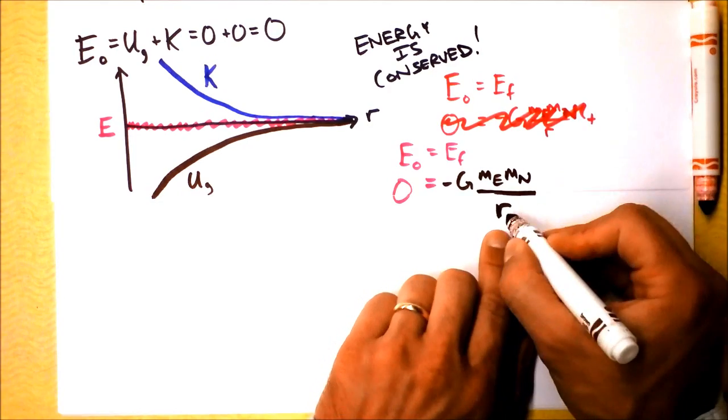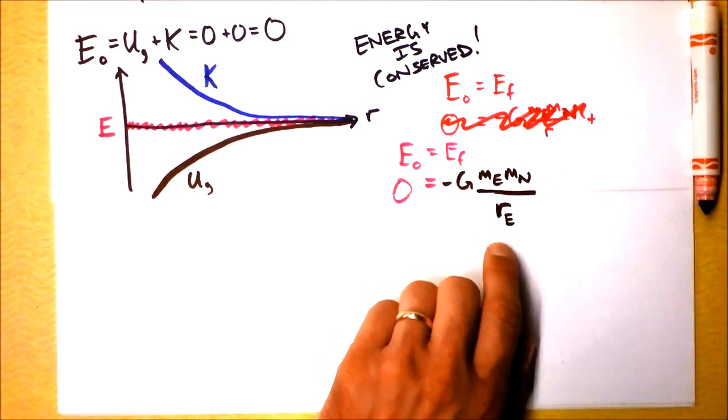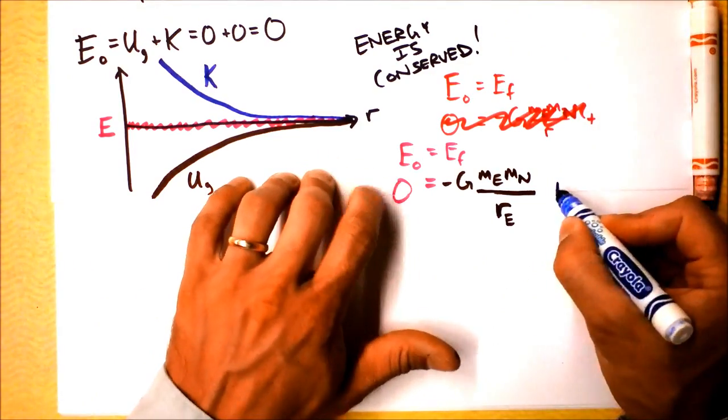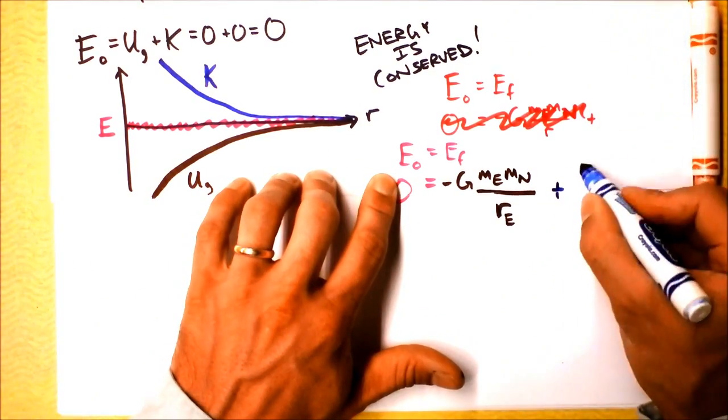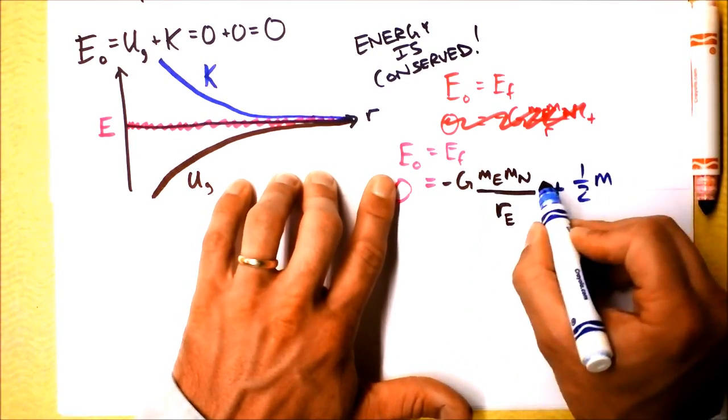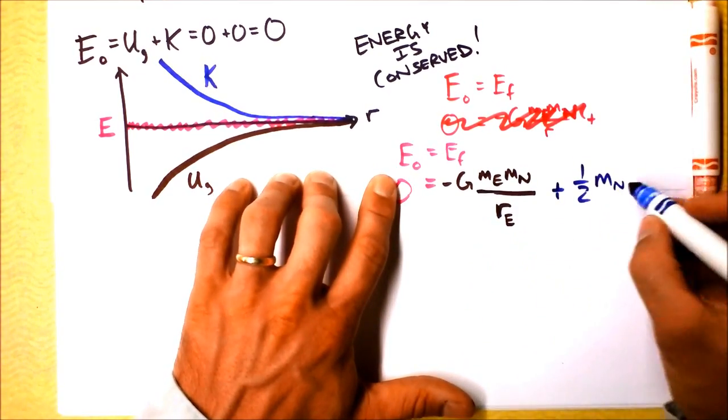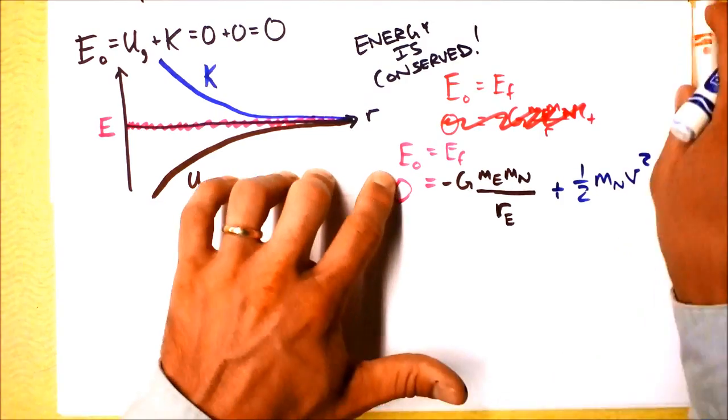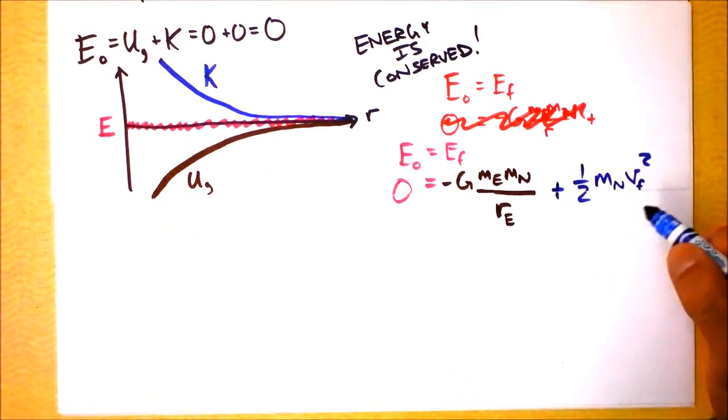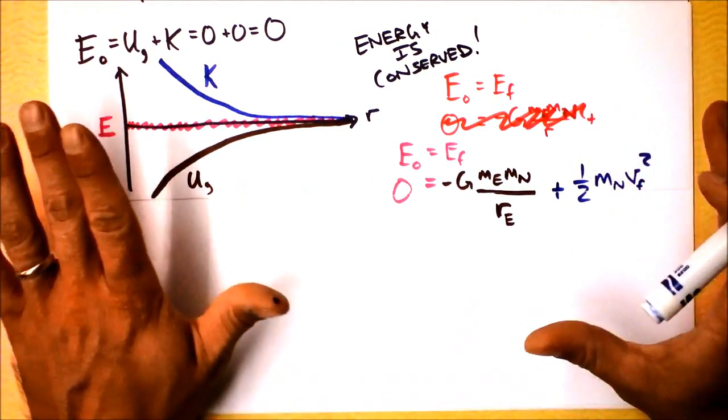If he's going to actually fall to Earth, then we can call this the radius of Earth. Then we have to add on the kinetic energy of Newton: plus one-half the mass of Newton times V-squared.